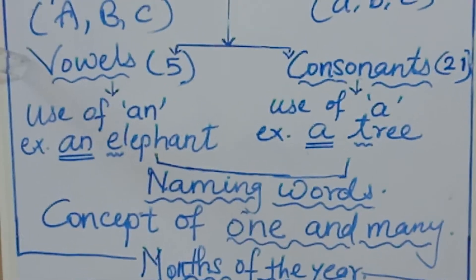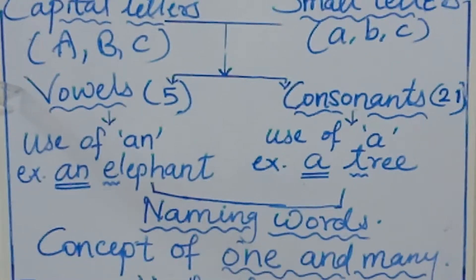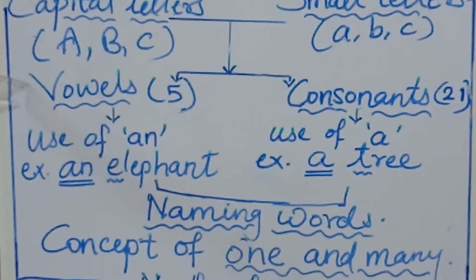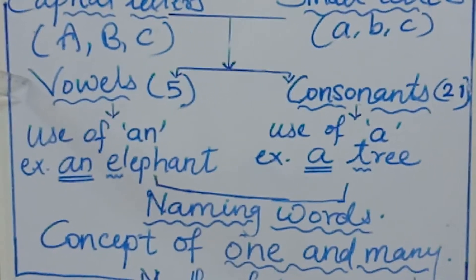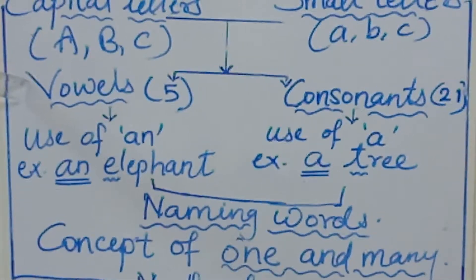These vowels are 5: A, E, I, O, U are the 5 vowels.